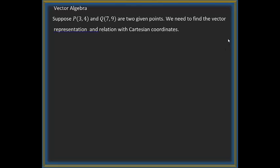Vector algebra: suppose P is a point (3,4) and Q is a point (7,9). We need to find the vector representation and relation with Cartesian coordinates. Let me go with notation.